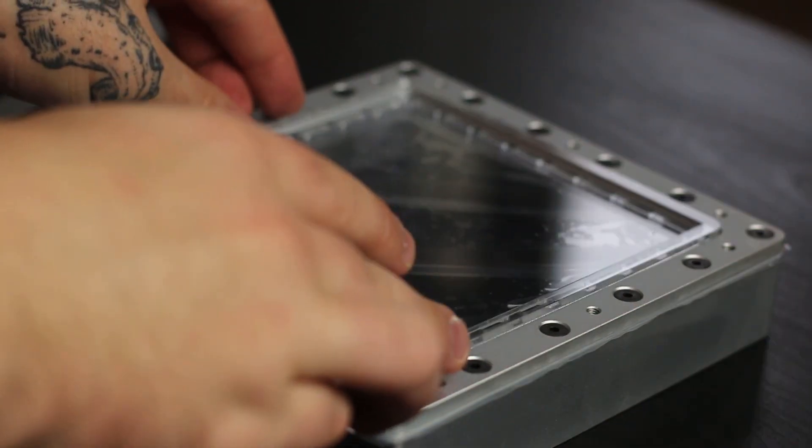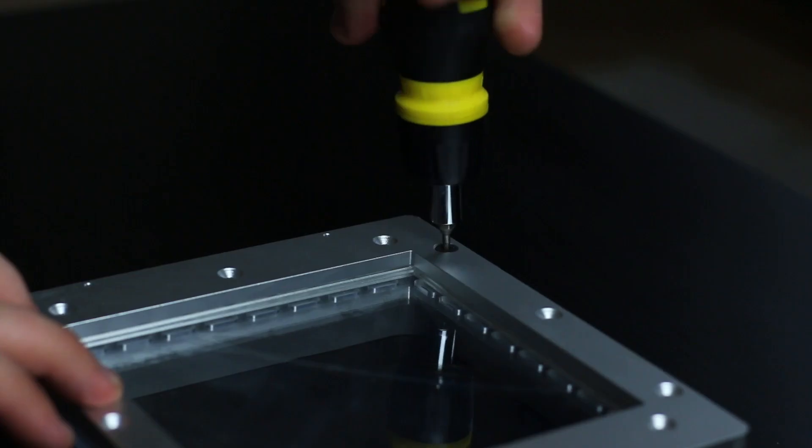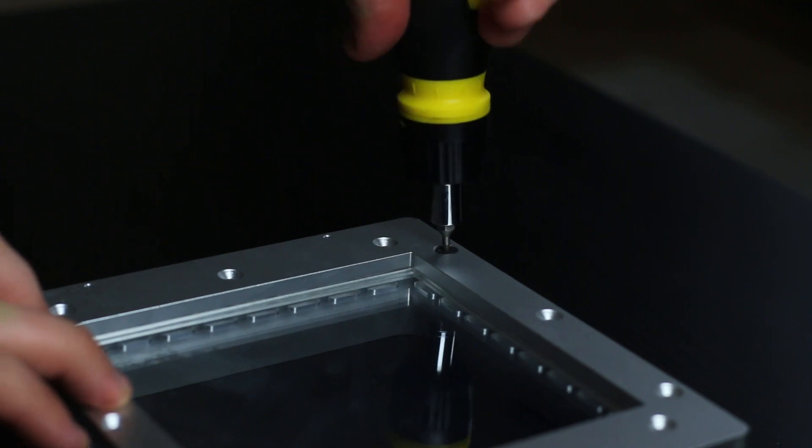So drop that in and then place the acrylic spacer on top, and then you use the big metal plate and make sure that the longer sides are to the side of the vat, not the front and back.